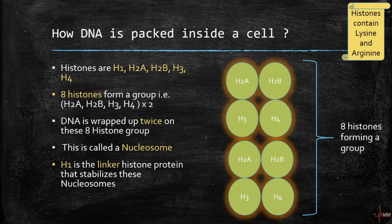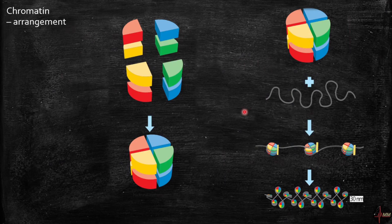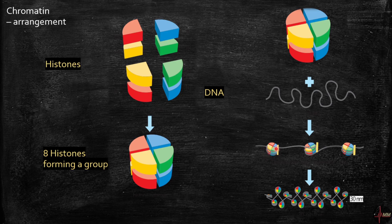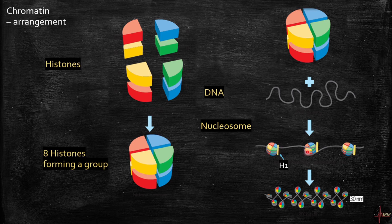This is how chromatin is arranged. The histone proteins H2a, H2b, H3, and H4 times two form a group of eight. The DNA, which is around two meters long in each cell, must be compactly placed inside the nucleus, so the histones help with this. The DNA wraps up twice on the histone group to form a nucleosome. Here is one nucleosome, another one, and another one. To stabilize these nucleosomes, we have the H1 linker protein.